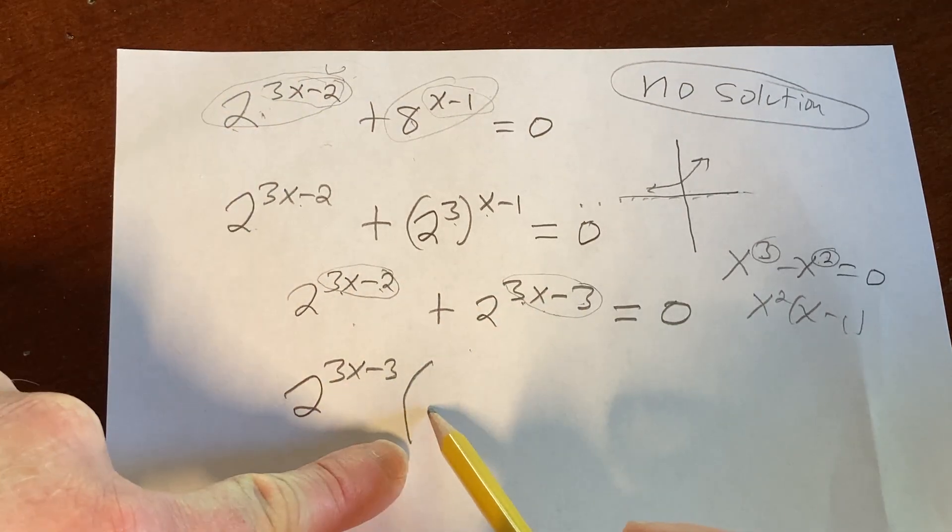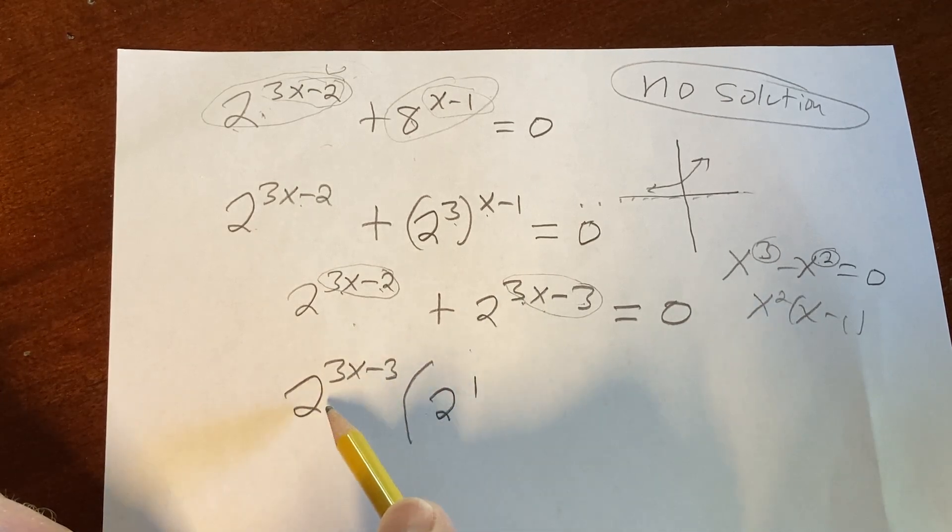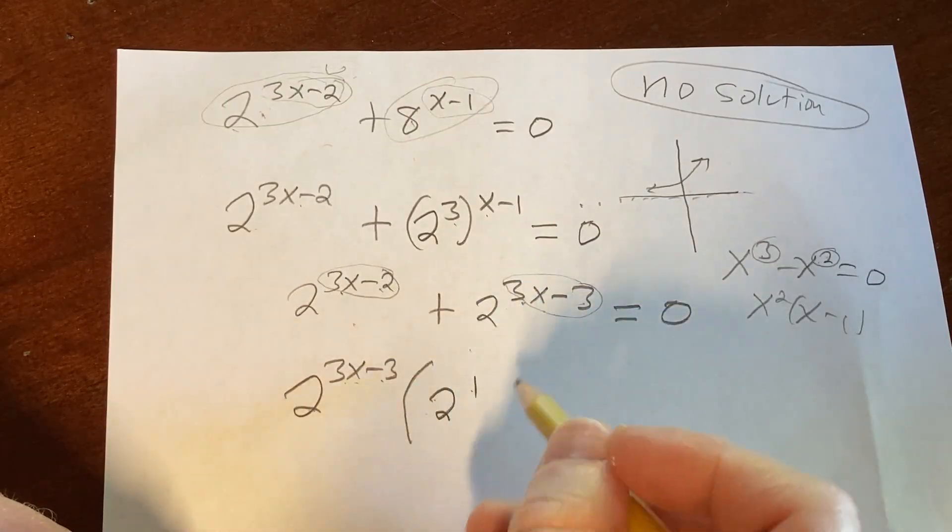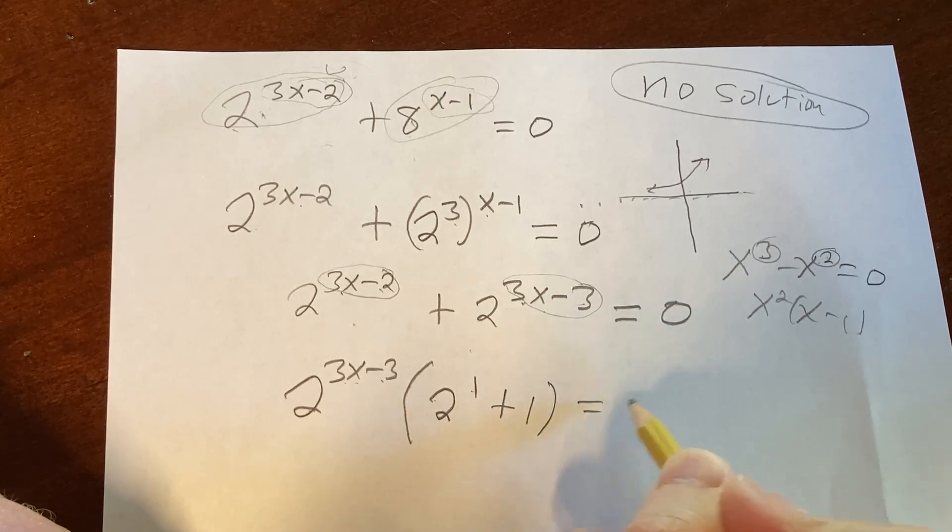So here you have to figure out what goes here. We need a 2 to the first power, because when you multiply these, you add the exponents. 3x minus 3 plus 1 is 3x minus 2. And then here we just have plus 1.